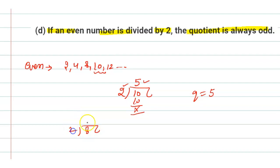But if we consider the even number 8, then 2 fours are 8, so the quotient is 4. You can check here that the quotient is not always odd—it can be even or maybe odd. So the given statement is false. Thank you.